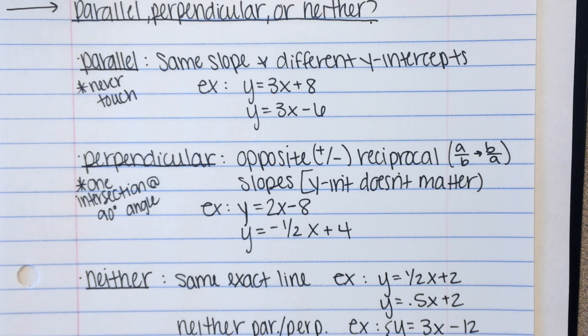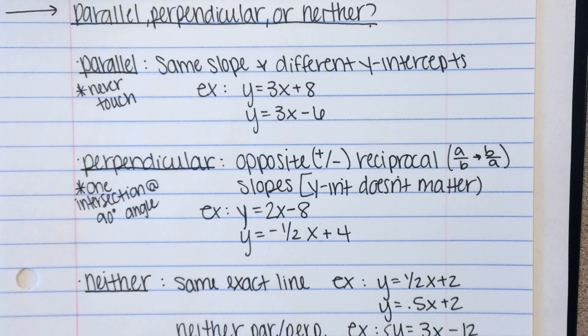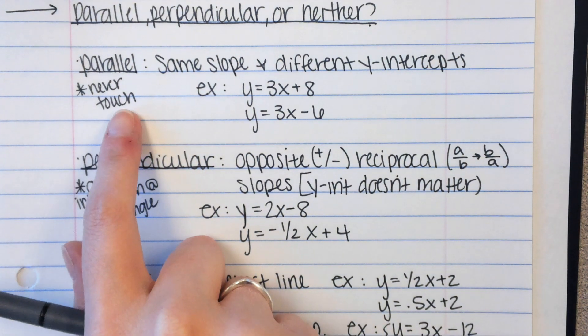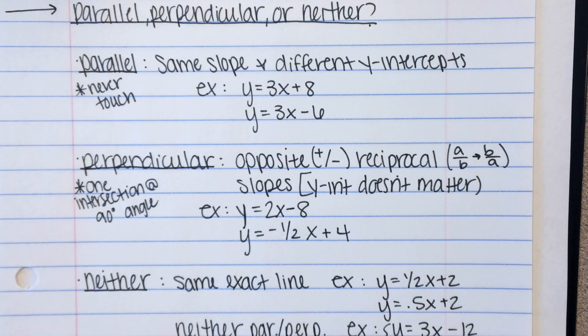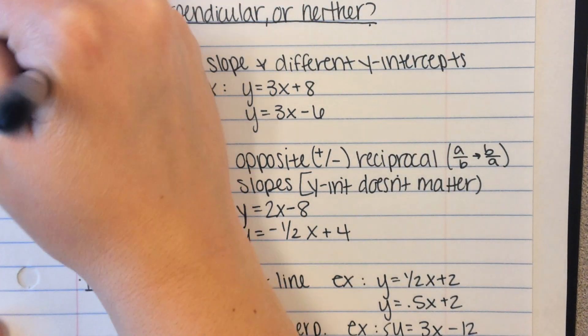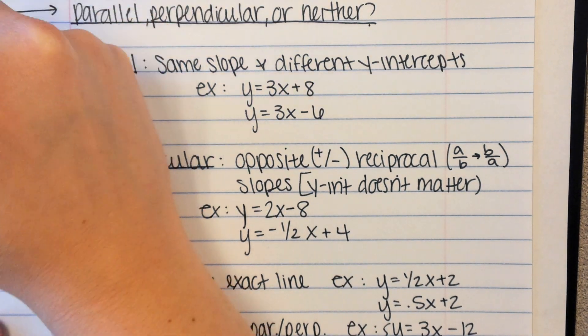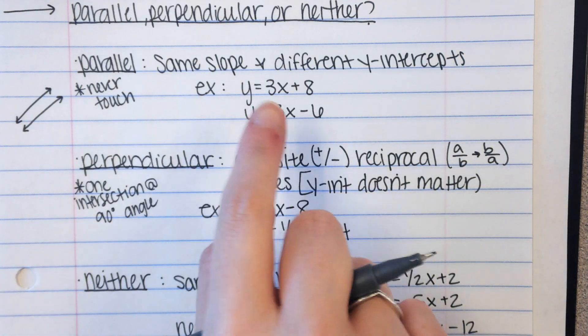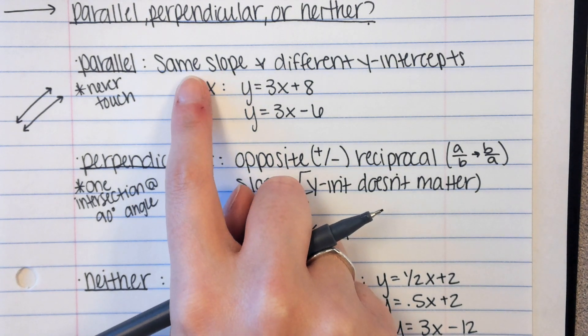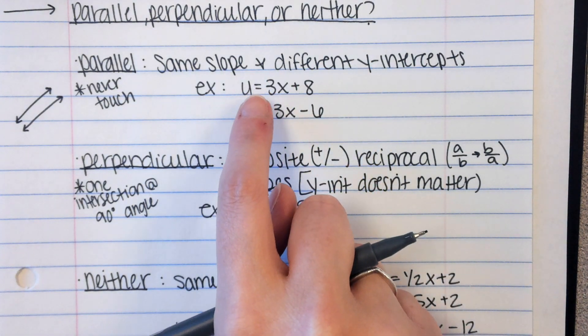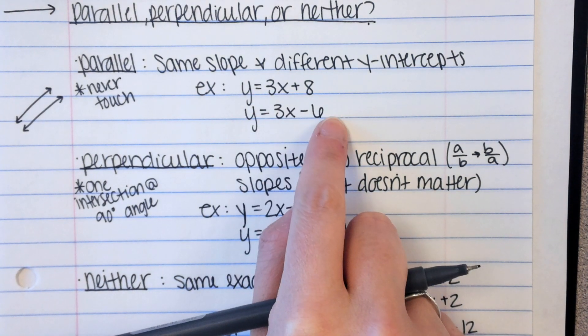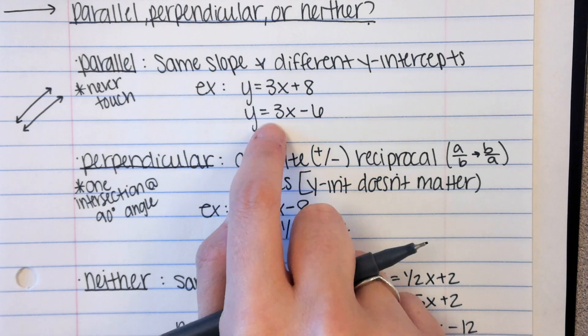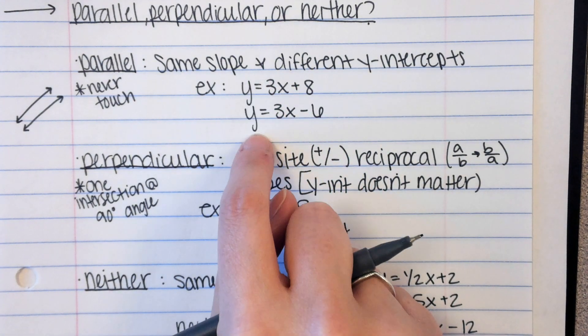Next, we're going to talk about parallel, perpendicular, or neither. So when you're looking at a pair of lines or equations, you should be able to tell if they're parallel, perpendicular, or neither. Parallel lines never touch. So they go on and on forever. They never intersect. So we'll sketch out a little example. Okay? Those two lines are parallel. They go on forever and never touch. When you look at their equations, you'll notice they have the same slope and different y-intercepts. So we have y equals 3x plus 8 and y equals 3x minus 6. They have the exact same slope and their intercepts are different. So those two lines would be parallel.